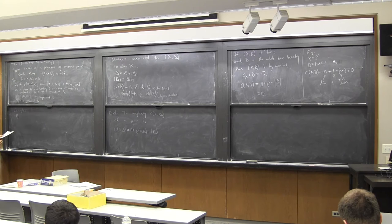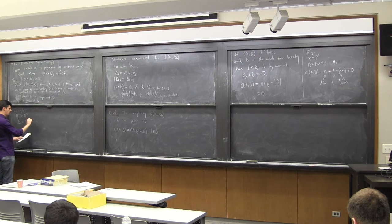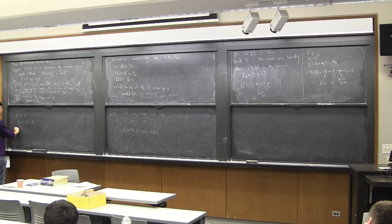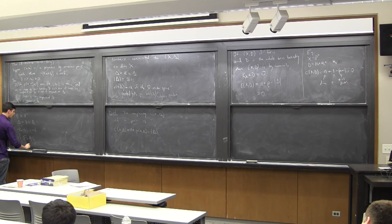My first example: take the simplest surface X = P^2. No matter what I choose for my boundary, it's going to be some combination of curves in P^2. If I require that −K_X + Δ is nef, that's going to imply that the total degree of this divisor is less than or equal to 3. So the sum of the b_i's times the degree of the components is less than or equal to 3.